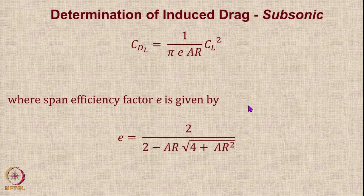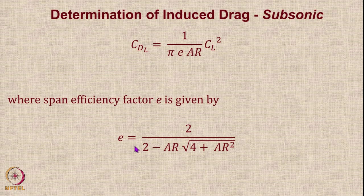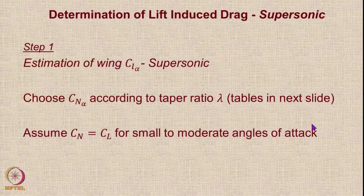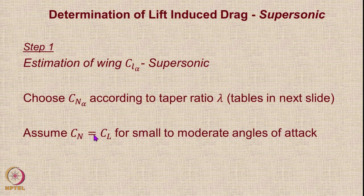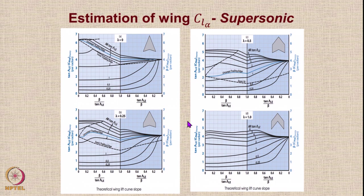Finally, we come to CDL. There is a simple formula for calculation of the lift-dependent drag, and you can use a more accurate formula for the span efficiency factor. The procedure is: first calculate the wing CL_alpha supersonic — choose CN_alpha according to the taper ratio. For small angles, the normal force coefficient equals the lift force coefficient. There are tables and graphs for taper ratios λ = 0, 0.5, 0.25, and 1, and you interpolate between them depending on the trailing edge and configuration.